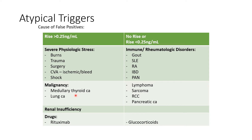In renal insufficiency, the procalcitonin baseline levels are usually high, so in CKD patients, procalcitonin is not a very good marker for identifying bacterial infection. In other immunological or rheumatological disorders — gout, SLE, rheumatoid arthritis, inflammatory bowel disease, polyarteritis nodosa — there is no rise in procalcitonin. Malignancies like lymphomas, sarcomas, RCCs, and pancreatic carcinomas usually do not cause a rise, and even long-term glucocorticoids do not produce an elevated procalcitonin.